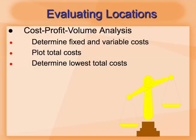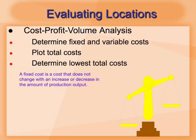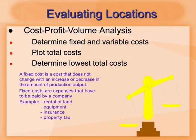Before we draw our graph, we need to know what is fixed cost and what is variable cost. A fixed cost is a cost that does not change with an increase or decrease in the amount of production output. Fixed costs are expenses that have to be paid by a company. For example, rental of land, cost of equipment, insurance, properties tax.